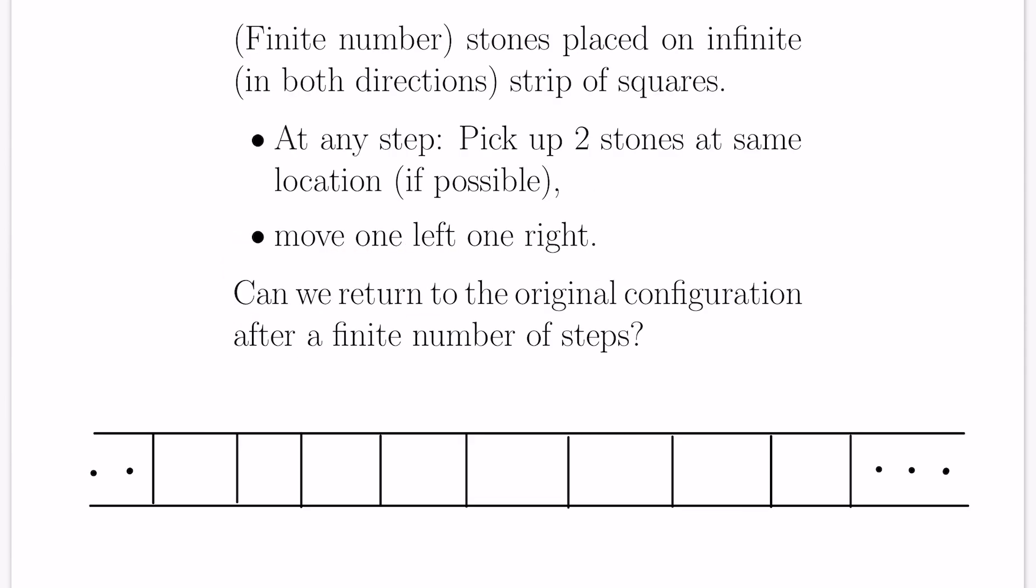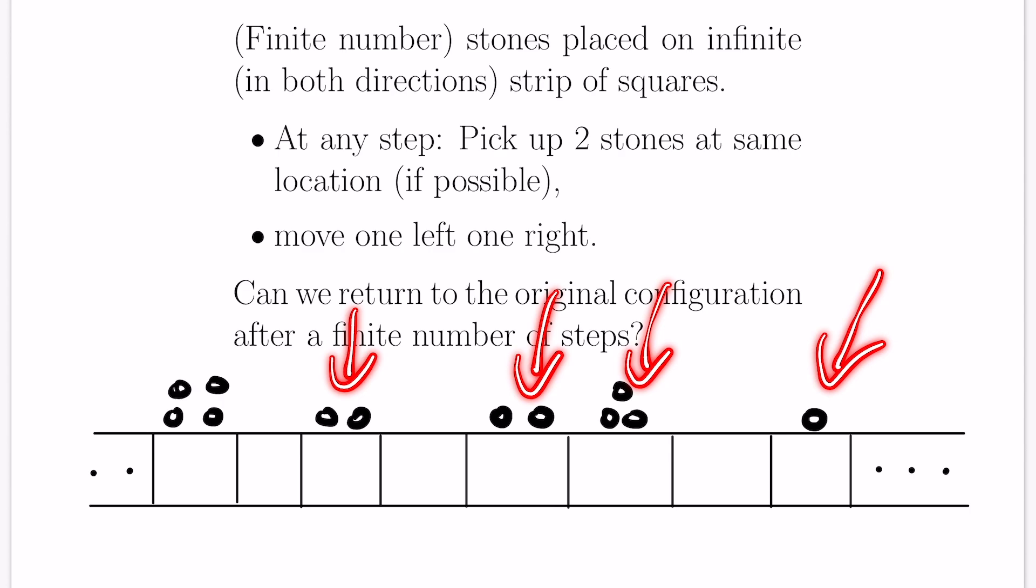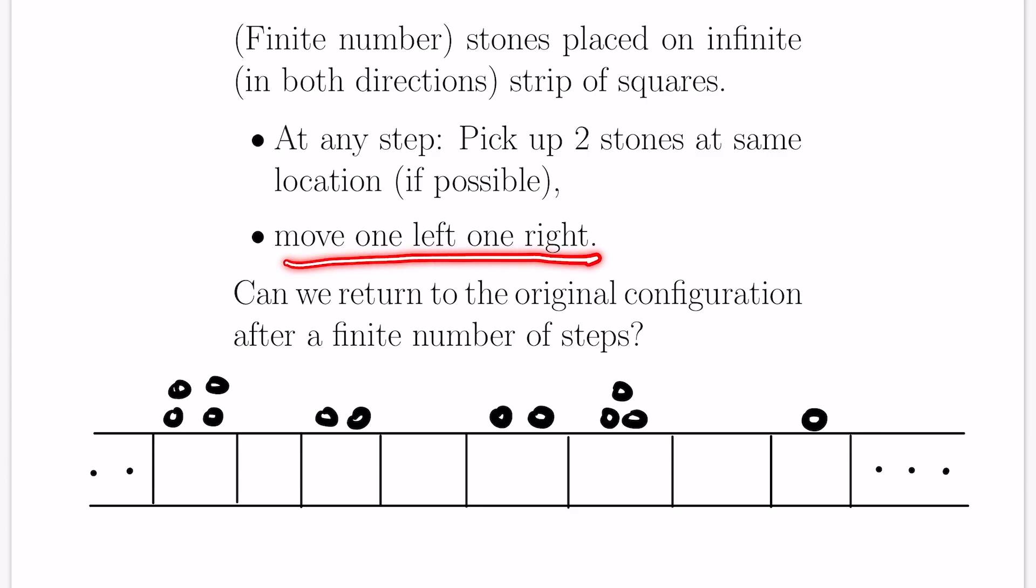We'll finish off with a really interesting problem that's a cool application of monovariance. Say you have an infinite strip of squares, and it's infinite in both directions. You have a finite number of stones that are placed on these different squares. For example, you might have a situation like this, where you have stones placed only in these five squares. At any step, you're allowed to do the following process. Pick up two stones at the same location if possible. You can't pick up two stones here, but you could here, or here. Then once you do that, you move one stone to the left and one to the right.